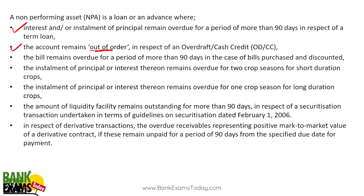In case of a CC or overdraft, it becomes out of order and is called an NPA. Bills remain overdue for more than 90 days. In case of agriculture, the installment, principal, or interest thereon remains overdue for more than two crop seasons for short duration crops, and one crop season for long duration crops.